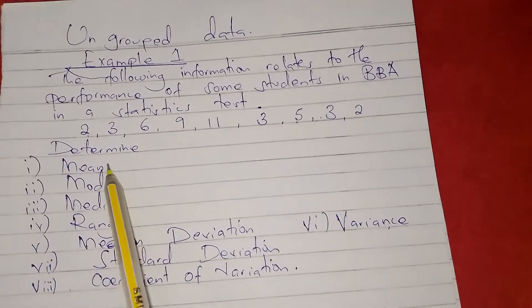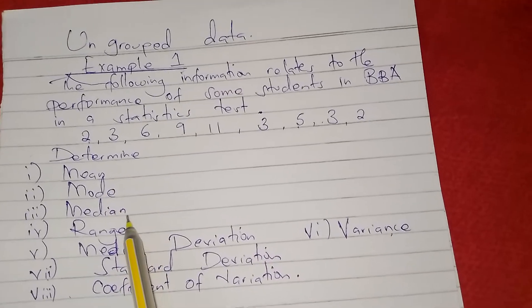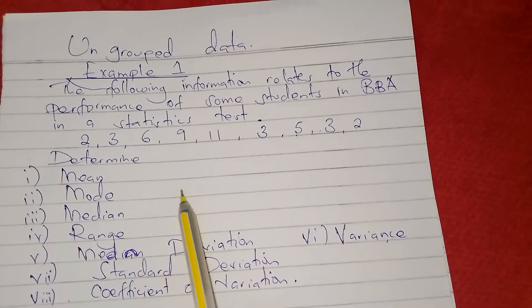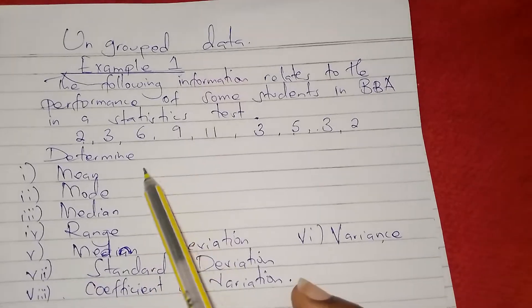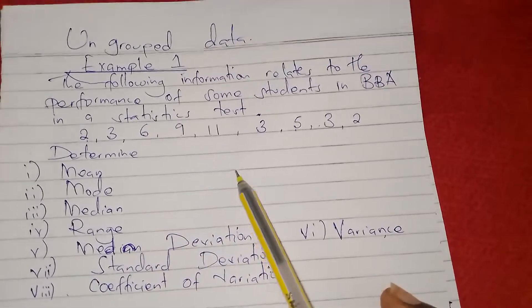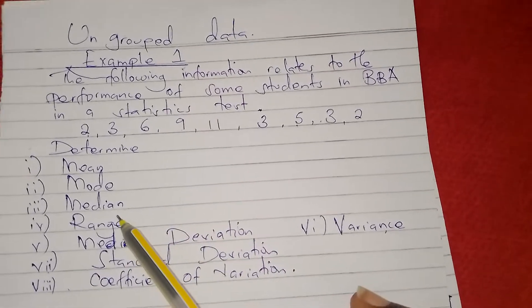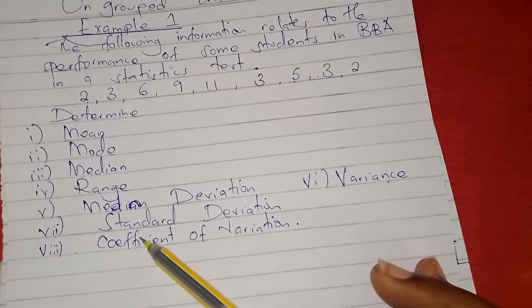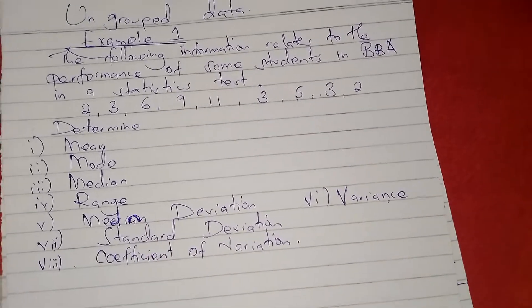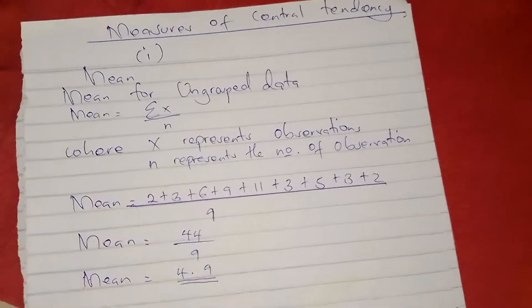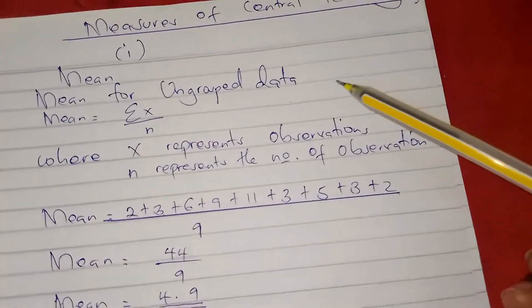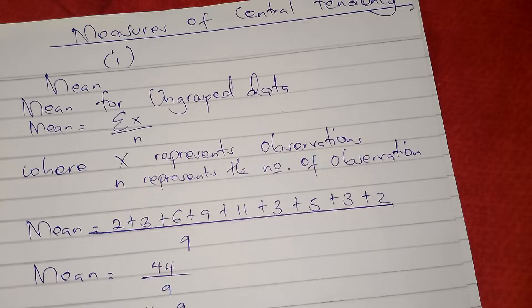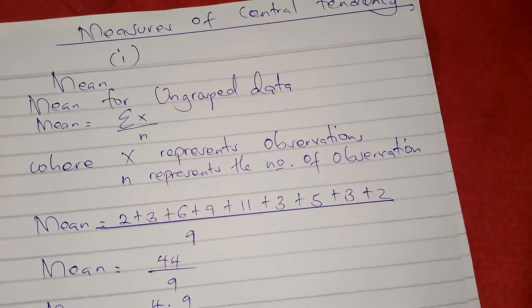We shall first deal with the three: mean, mode and median, since these are the measures of central tendency. Then later we shall handle the rest, which are the measures of dispersion or variation.